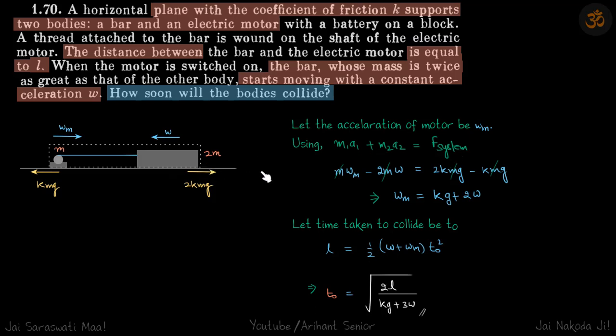So we are considering towards right. So towards right, the net force is 2KMG minus KMG. Because the only external force is because of the friction, the tension in the thread is internal force, so we are not writing that.